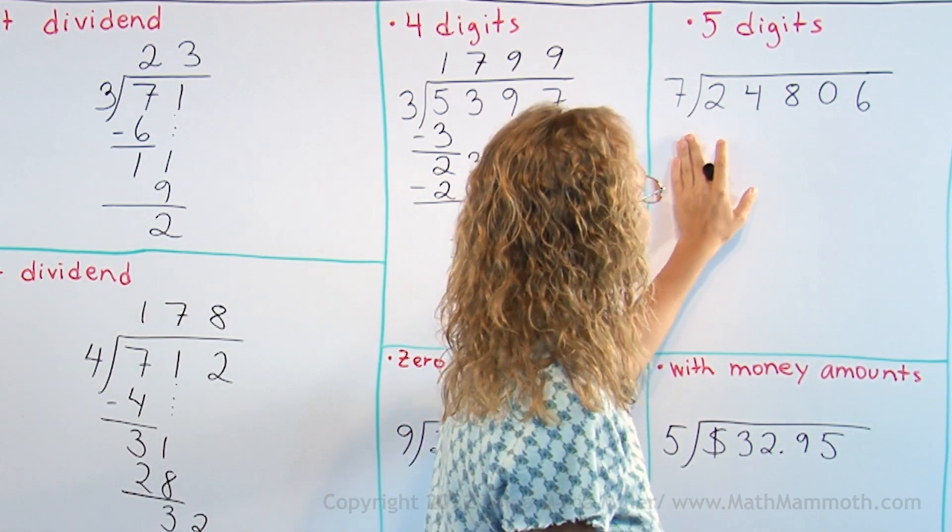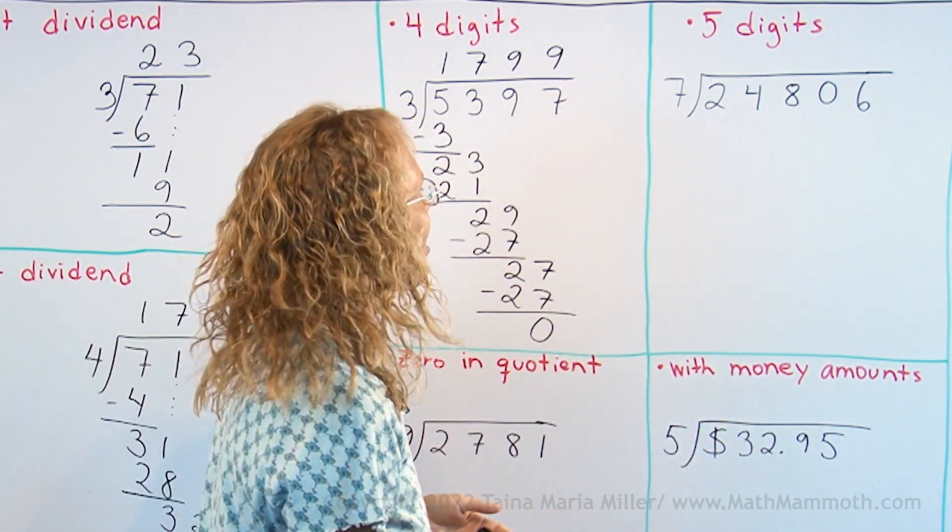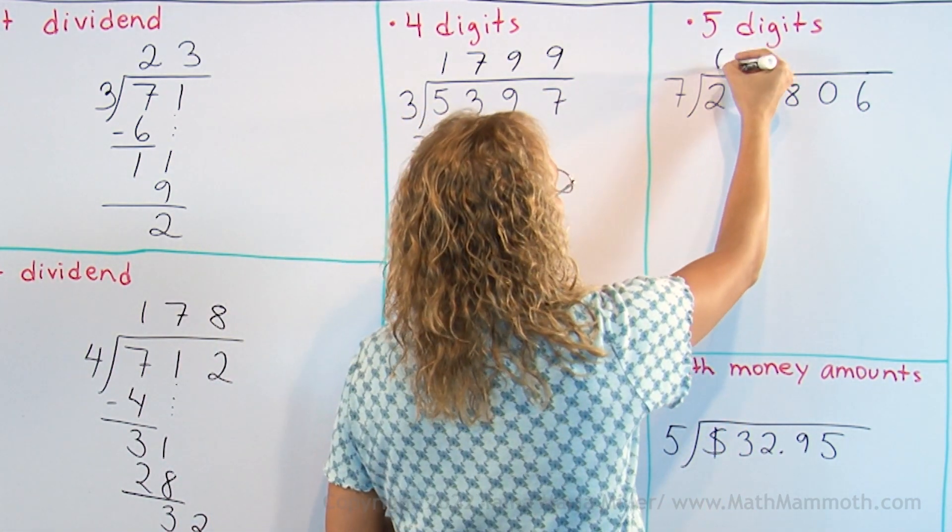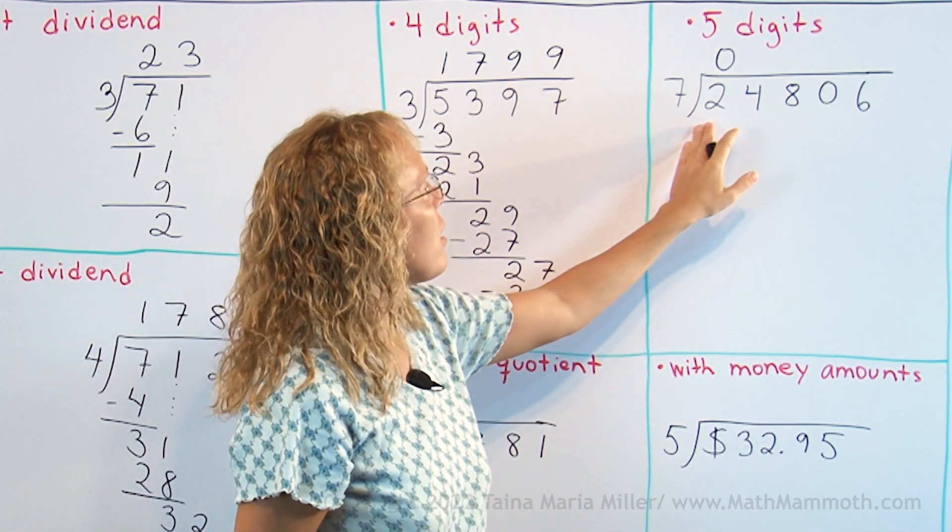With 5 digits, it is the same process, nothing changes really. 7 goes to 2, 0 times. So we need to look at 24 in the dividend.